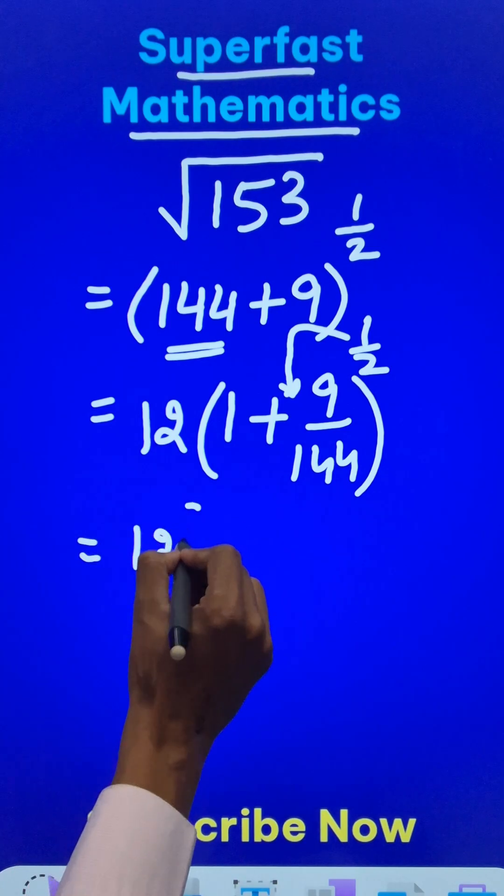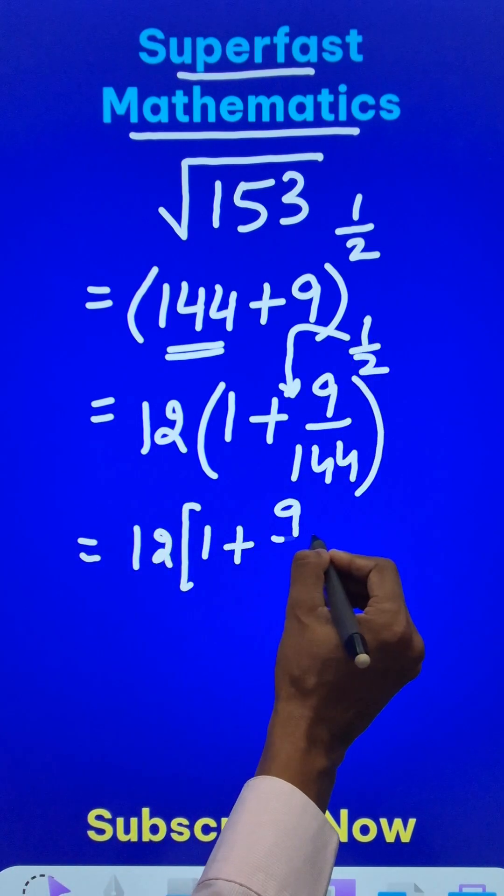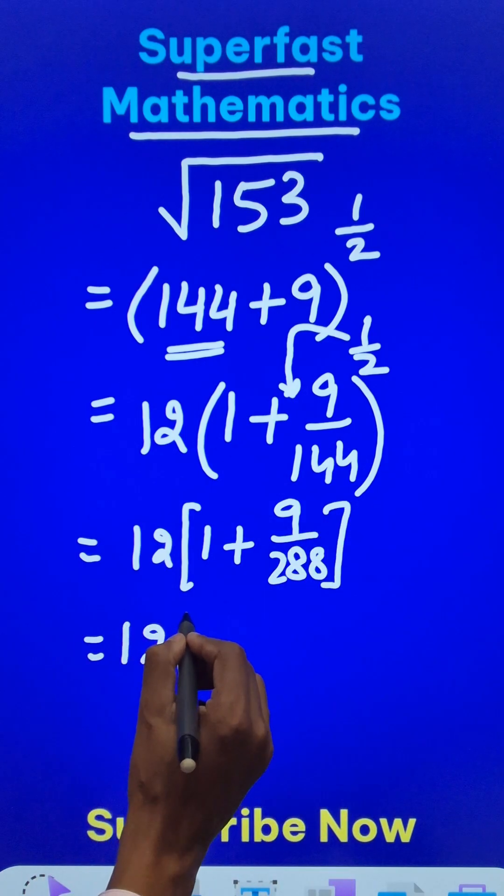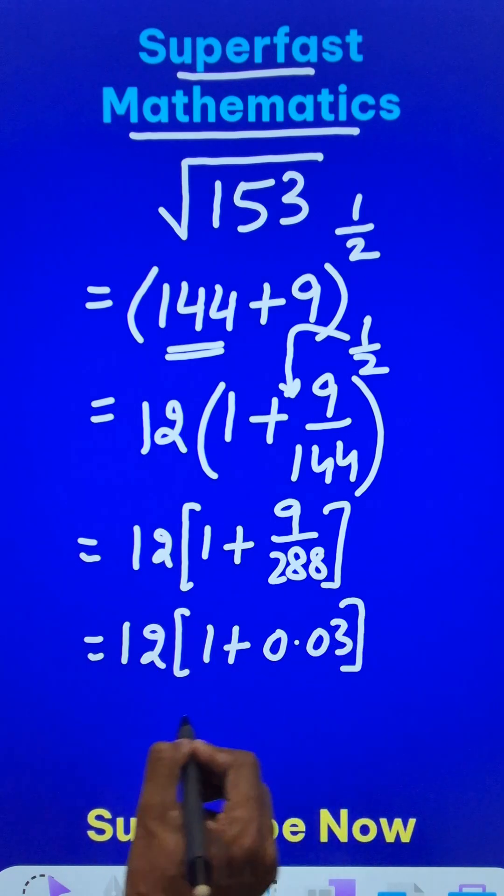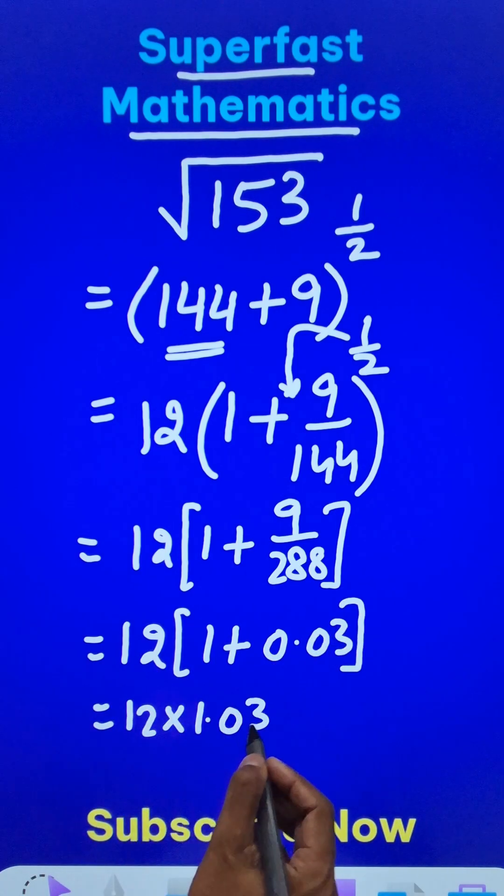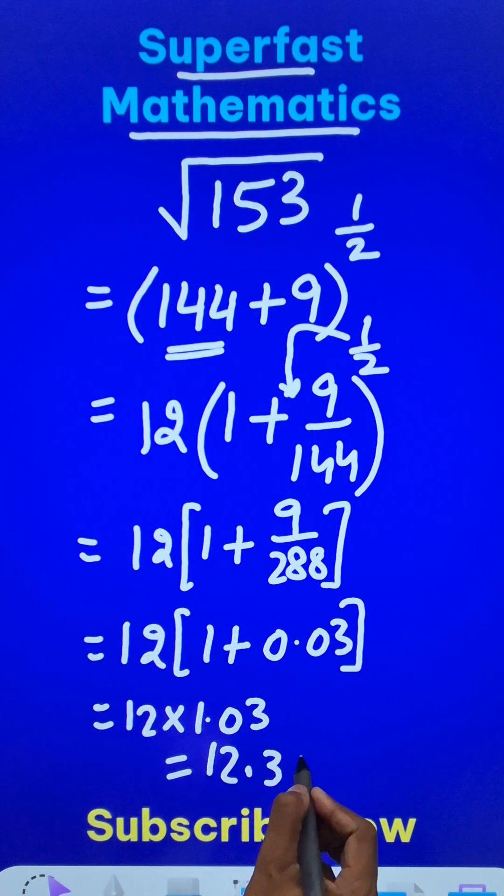So this is 12 times 1 plus half of 9 upon 144, which is 9 upon 288. This becomes 12 times 1 plus 0.03, and 12 times 1.03 will give me the approximate value of the square root of 153, which is 12.36 approximately.